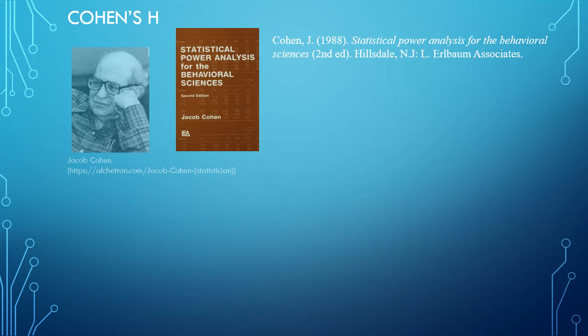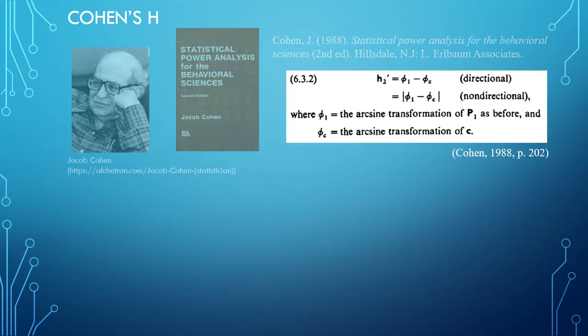On page 202, we find that H2—H itself is actually used for the paired samples—and in this case we have a non-paired sample, so one sample actually. As you might notice, φ is actually the arc sine transformation of P1, or the expected counts.